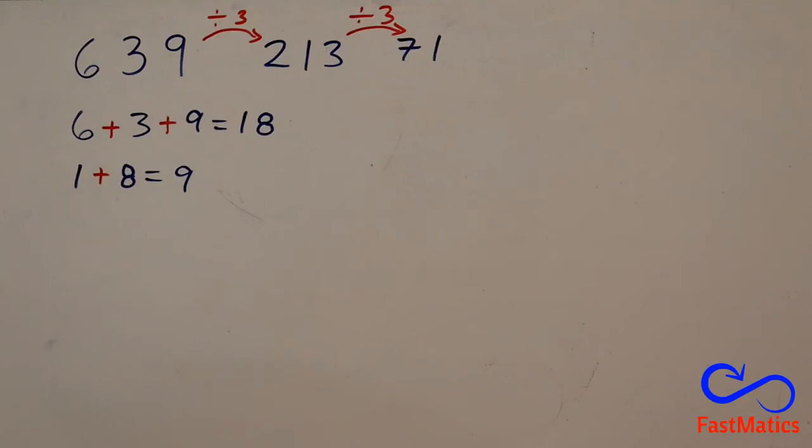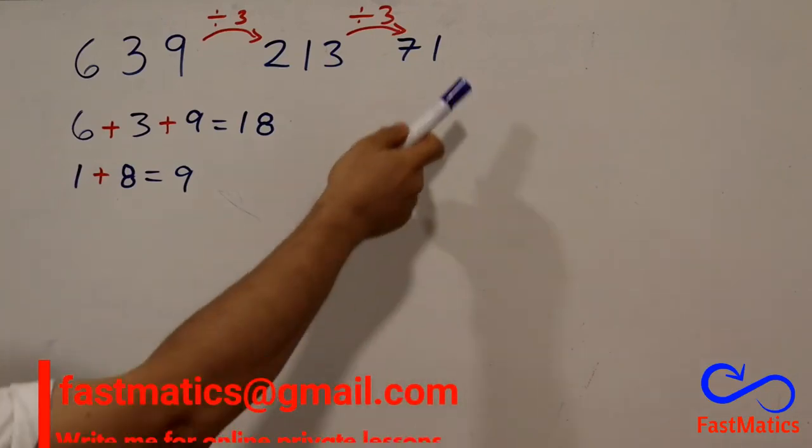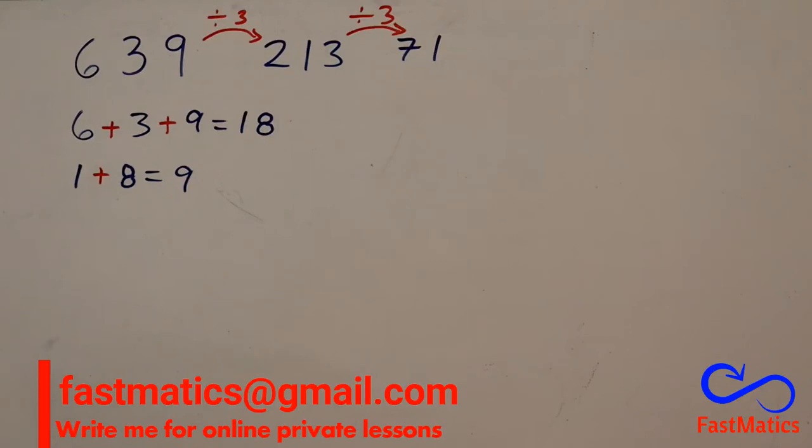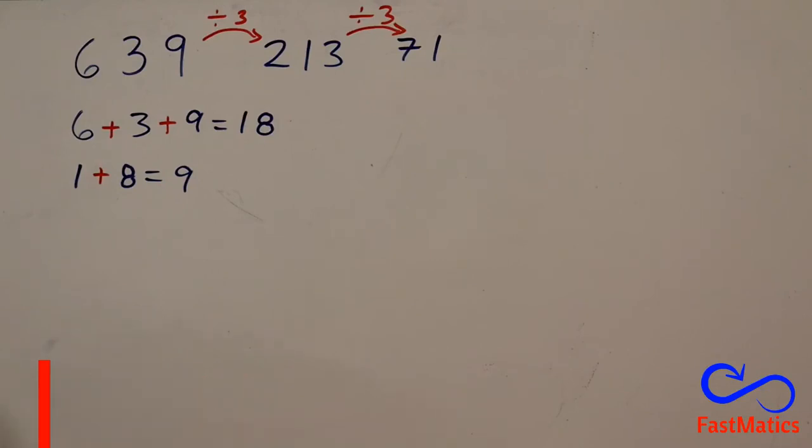3 multiplied by 2 is 6, 3 by 3 is 9. So, 71 is not divisible by 3. And that's it.